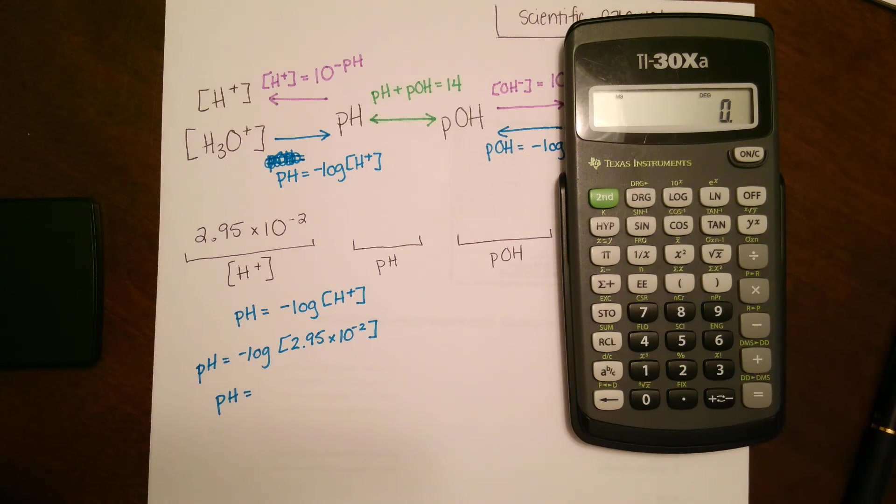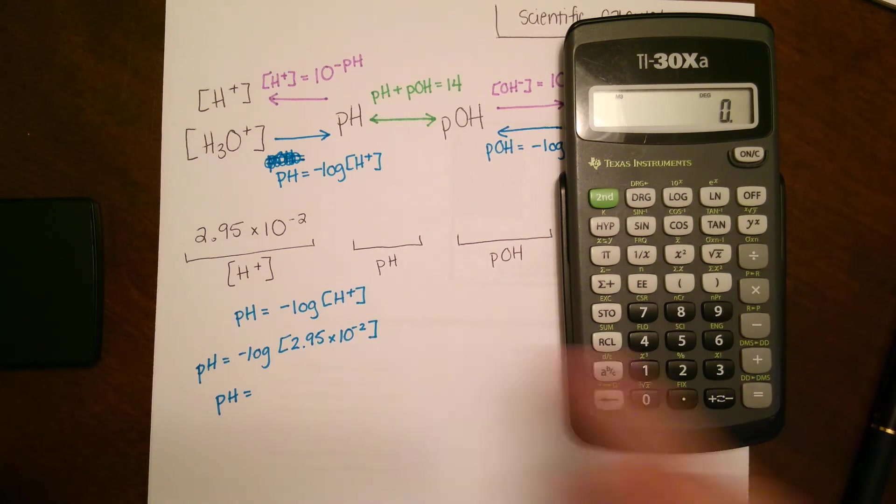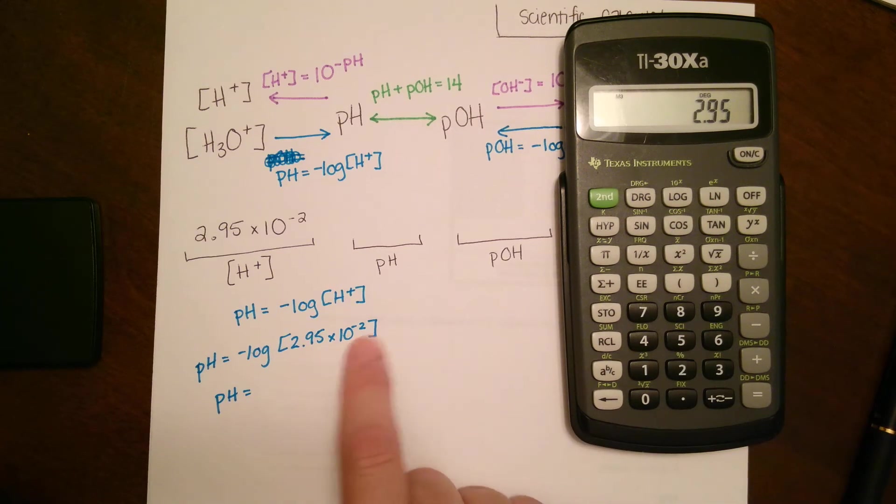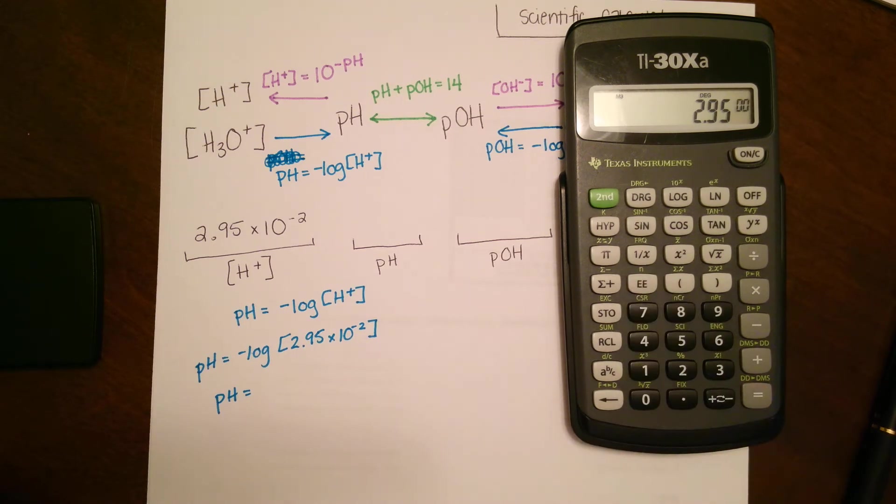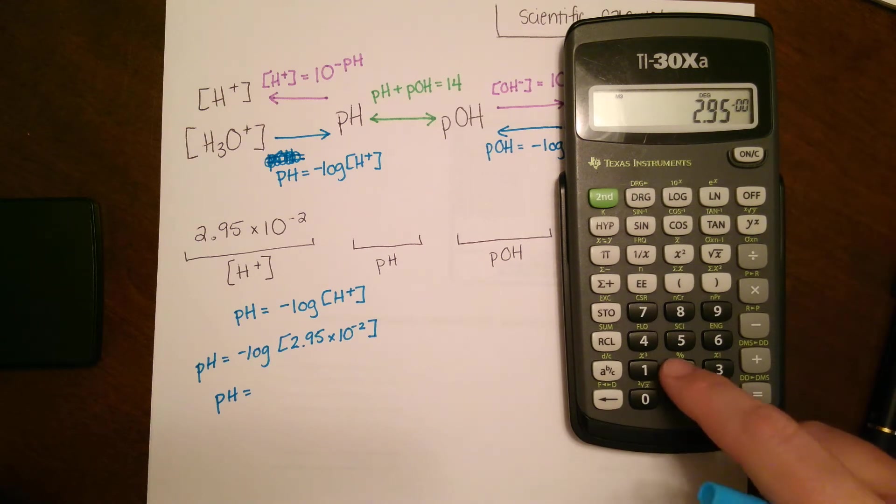For this calculator, you're going to have to type in the number first. You're going to say 2.95. Instead of typing times 10 to the, we want as few keys pushed as possible. We're going to say EE, and you'll see that little box up top pop up. So that EE is times 10 to the, you'll say negative 2.